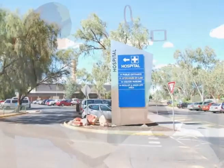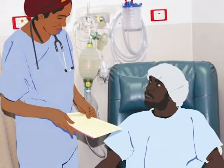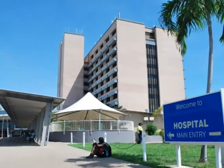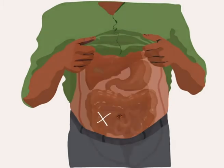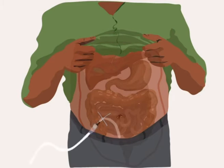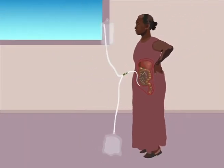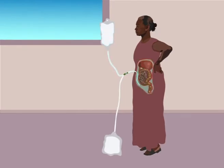To do PD, first you have to have an operation at the hospital. The doctor will make a small hole into your peritoneum. The doctor will put a small soft tube into this hole. This is called a catheter. The catheter lets the dialysis water go in and out of your peritoneum.